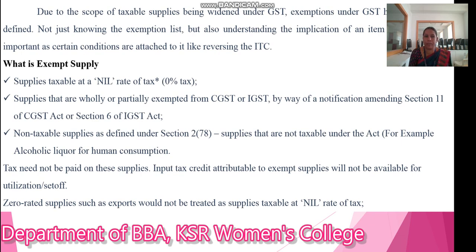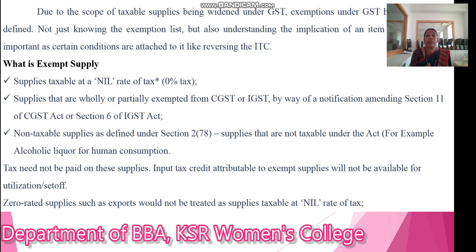Next, what is exempted supply? Supply taxable at a nil rate or 0% tax will be fully exempted. Suppliers that are wholly or partly exempted from CGST or IGST by way of notifications under Section 11 of the CGST Act or Section 6 of the IGST Act. Non-taxable supplies as defined under Section 2, subsection 78 — suppliers that are not taxable under this Act. For example, alcoholic liquor for human consumption.